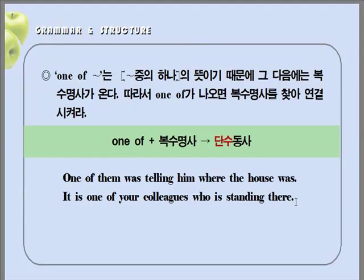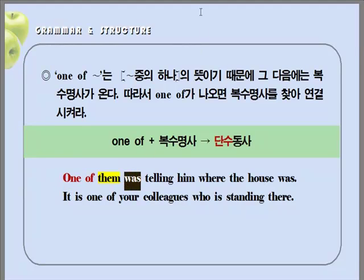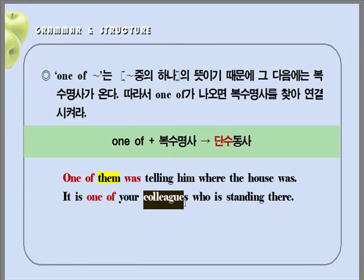예문 보겠습니다. 'One of them was telling him where the house was.' 그 중에 한 사람이 그 집이 어디에 있는지 그에게 말하고 있었다. 'one of' 나와 있습니다. 그리고 복수명사 'them'이 나왔죠? 그리고 주어는 'one'이기 때문에 동사는 단수동사 'was'를 쓰게 됩니다. 다음 문장 보겠습니다. 'It is one of your colleagues who is standing there.' 저쪽에 서 있는 사람은 너의 동료 중에 한 사람이다. 'one of' 나왔습니다. 당연히 복수명사를 찾으면 됩니다. 그리고 이것 전체는 단수가 되는 거죠. 다시 한번 확인해 둡니다: 'one of'다면 복수명사를 찾아라. 그리고 단수 취급을 한다.